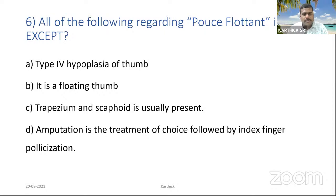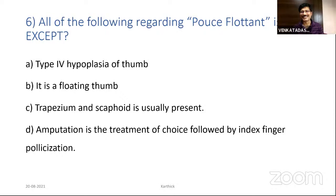Regarding floating thumb, all of the following are true except: it is a type four hypoplasia of the thumb, trapezium and scaphoid are easily present, amputation is the best treatment followed by index finger pollicization. Fifty percent answered floating thumb. The question asks for the false statement — it is a rudimentary thumb.